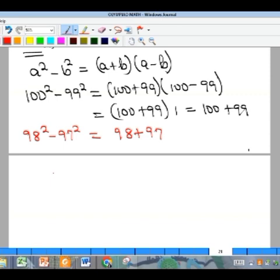If you continue that way you will keep getting the next one will be 96 + 95, next one will be 94 + 93, down to 2 + 1. So what it means is that if I have n² then minus the square of (n - 1).